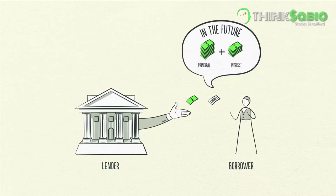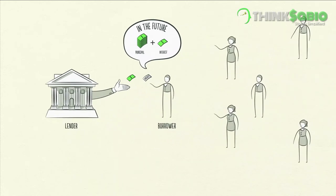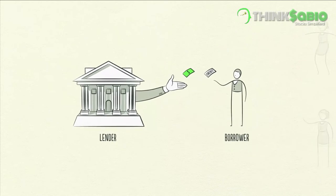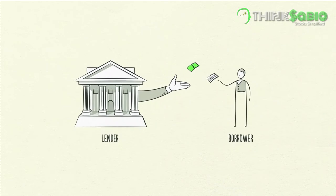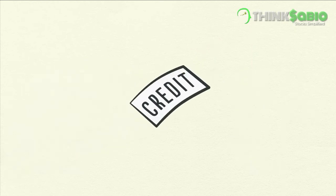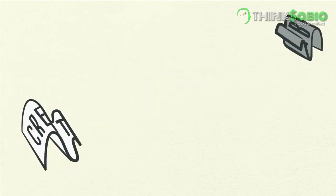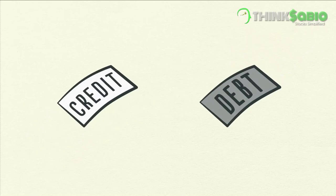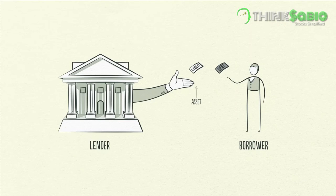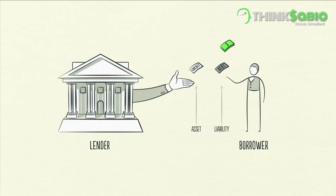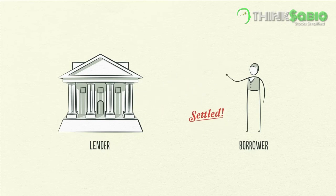When interest rates are high, there is less borrowing because it's expensive. When interest rates are low, borrowing increases because it's cheaper. When borrowers promise to repay and lenders believe them, credit is created. Any two people can agree to create credit out of thin air. Credit is tricky because it has different names — as soon as credit is created, it immediately turns into debt. Debt is both an asset to the lender and a liability to the borrower. When the borrower repays the loan plus interest, the asset and the liability disappear, and the transaction is settled.